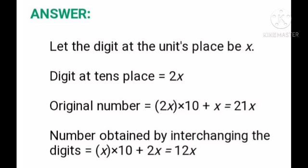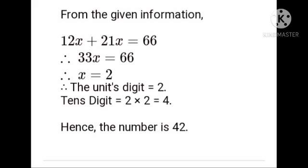So 2x into 10 is equal to 20x, and 20x plus x is equal to 21x. Number obtained by interchanging the digits is equal to x into 10 plus 2x is equal to 12x. From the given condition, 12x plus 21x is equal to 66. 12 plus 21 becomes 33, so 33x is equal to 66. Therefore, x is equal to 66 upon 33 is equal to 2. Therefore, the unit digit is 2 and tens digit is 2 into 2 is equal to 4. Hence, the number is 42.